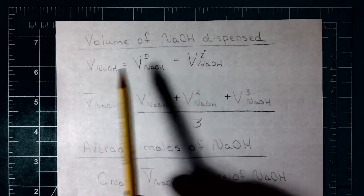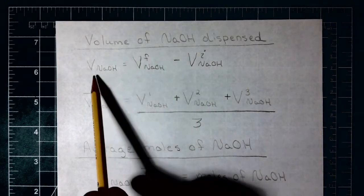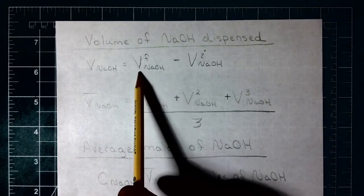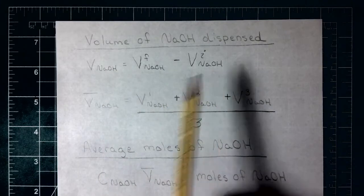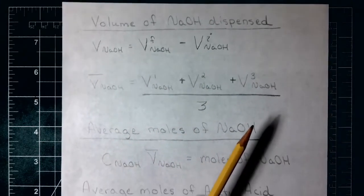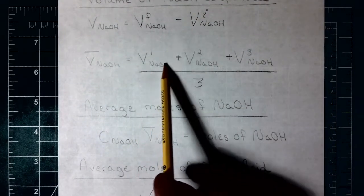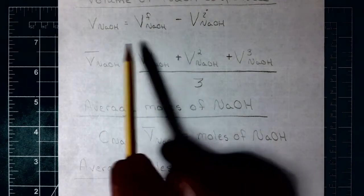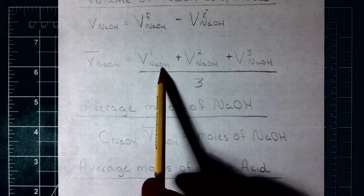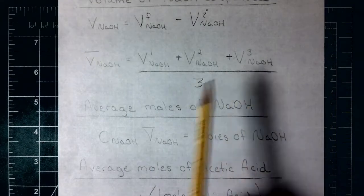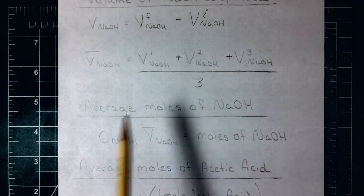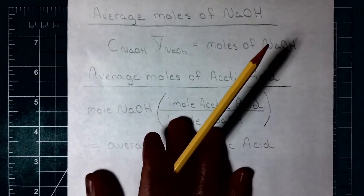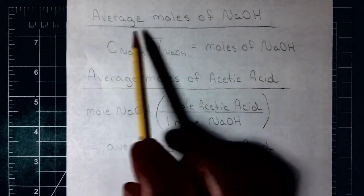The first thing we're going to calculate is the volume of sodium hydroxide that we added — this is going to be the final volume minus the initial volume. We're going to do that for three trials, repeat the experiment three times, and then take the average by adding the volume added for each of the three trials and dividing by three.